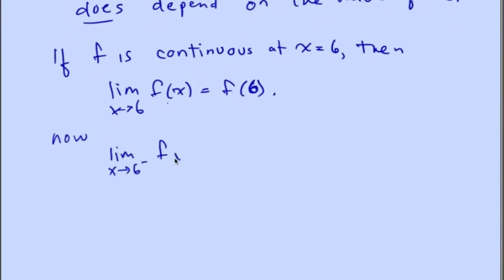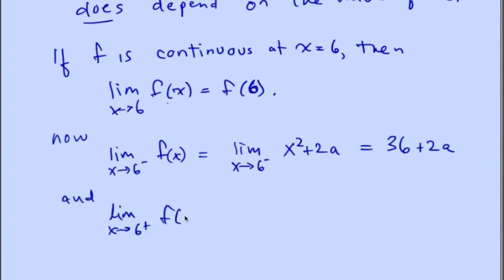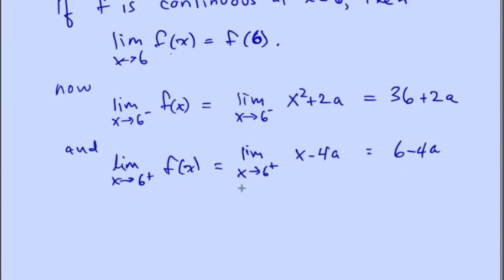Now, the limit as x goes to 6 from the negative side of f(x) equals the limit as x goes to 6 from the negative side of x squared plus 2a, which is 36 plus 2a. The limit as x goes to 6 from the positive side of f is 6 minus 4a.